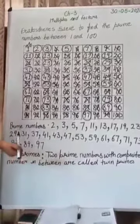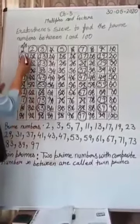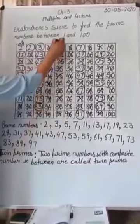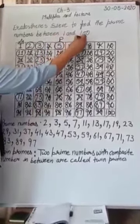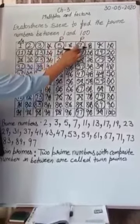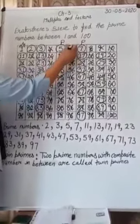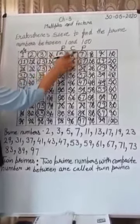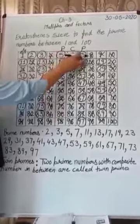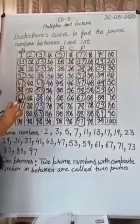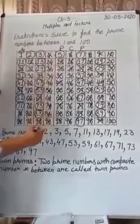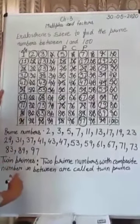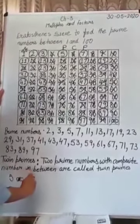We will find twin prime numbers between 1 to 100. 5 is prime, 7 is prime. In between, 6 is composite, so these are twin prime numbers and their difference is 2. 7 minus 5 is 2. So 5 and 7 are twin primes.